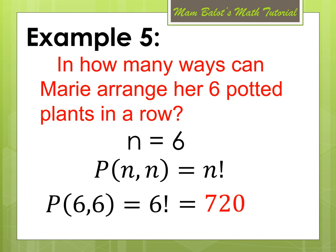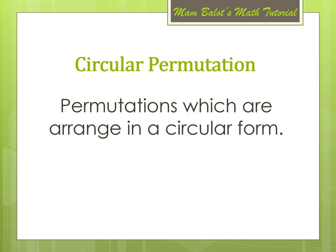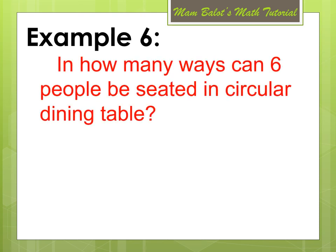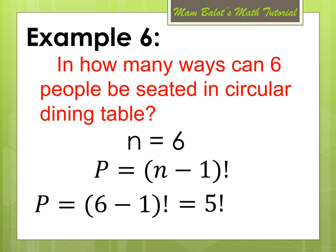So there are 720 ways that these 6 potted plants can be arranged in a row. Now, we have what we call circular permutation — permutations which are arranged in a circular form. We solve this using the formula (N minus 1) factorial. For example, in how many ways can 6 people be seated at a circular dining table? N is equal to 6, so we compute (6 minus 1) factorial = 5 factorial = 120. There are 120 ways that these 6 people can be seated in a circular dining table.